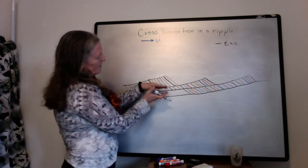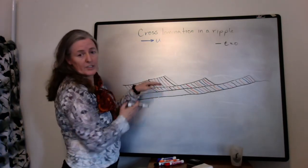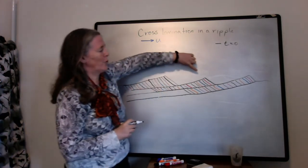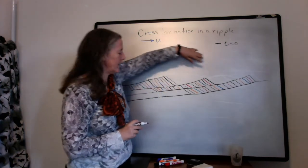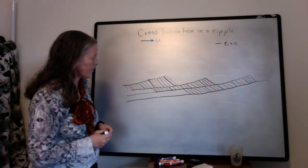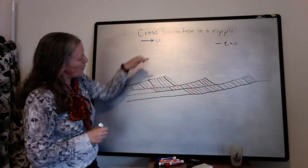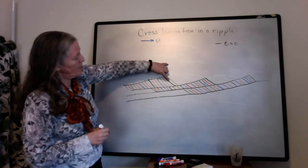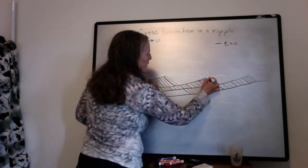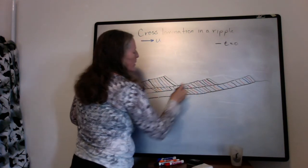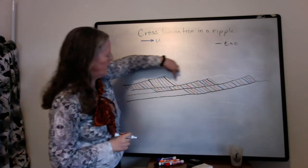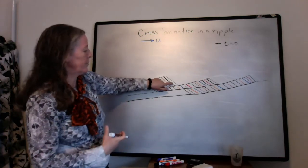And so when you have these sets of cross lamination sitting on top of each other, each one represents a bed form that has migrated through that area and left some of the sediment behind. So each set of these lamina that I've drawn, I'll do another one here,